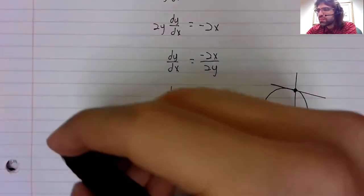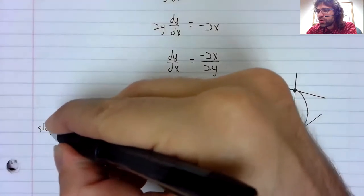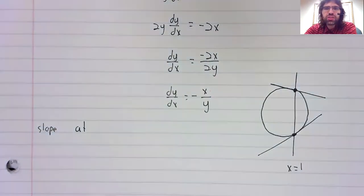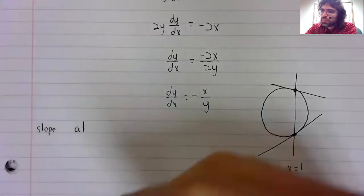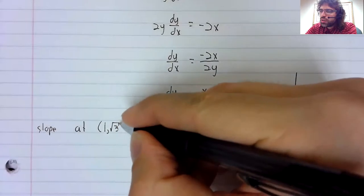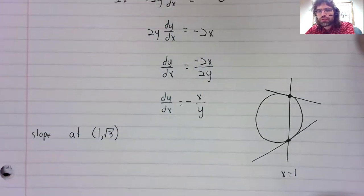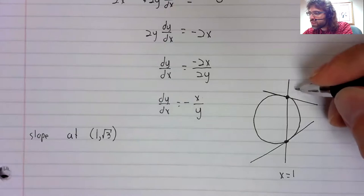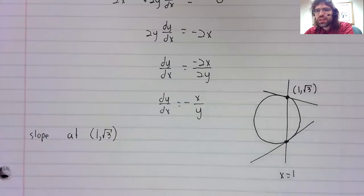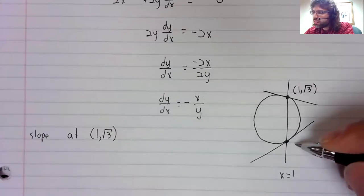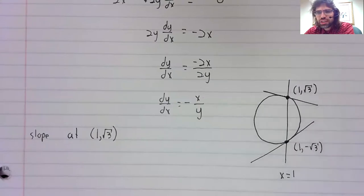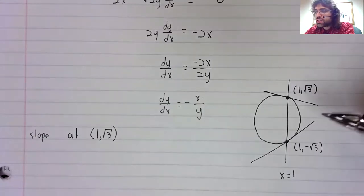Now let's ask what's the slope at one comma the square root of three. That's this point.